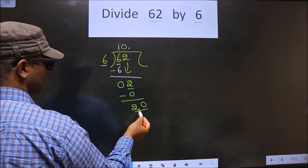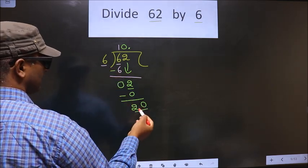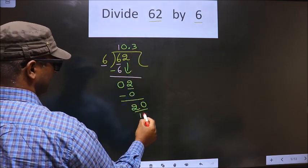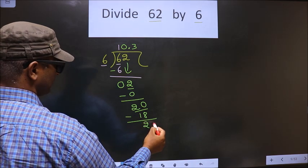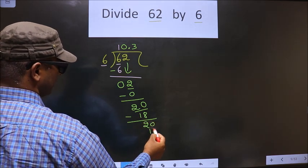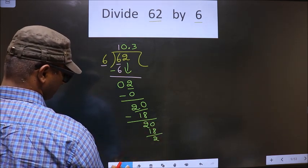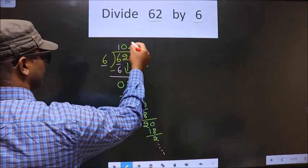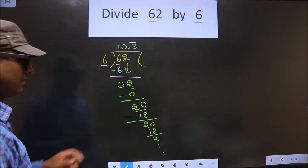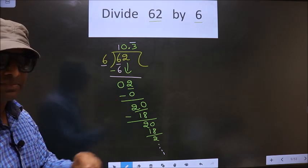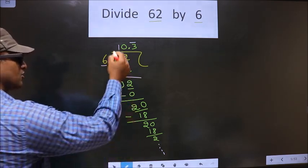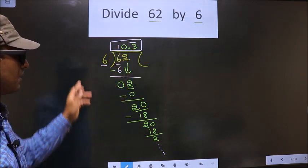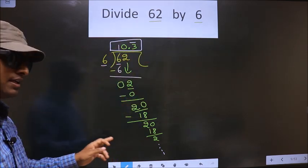Now here we have 20 and here 6. A number close to 20 in the 6 table is 6 times 3, which is 18. Now you subtract, you get 2. It goes on — this is a repeating decimal. Did you understand the mistake? So this is our quotient.